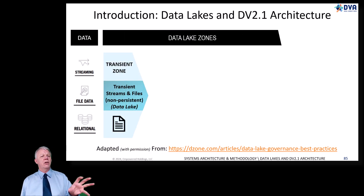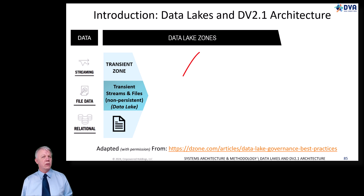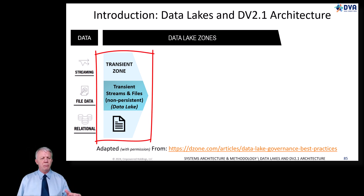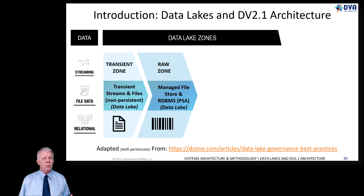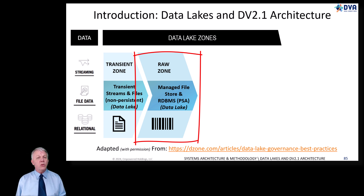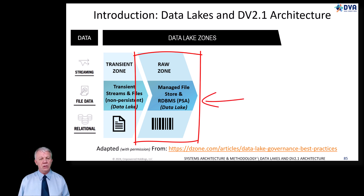The first thing to note is that everything's divided into zones. We use the term zones now for our architectural divisions. We have this thing called the transient zone, where we have streams, files, and non-persistent data — that's what we call the part of the data lake. Then we have a raw zone, which is a managed file store, relational database included, if you're going to include your persistent staging area.